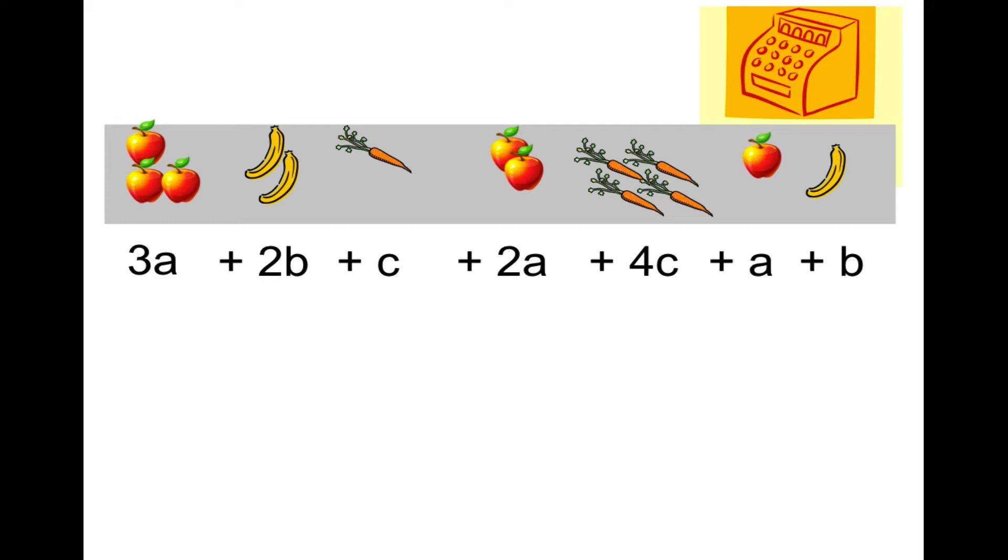Please take out as many highlighter colors as you have because we're going to need them. I'm going to begin by highlighting all the terms that have an a the same color. So I have 3a, 2a, and a. When I add them up, 3a plus 2a is 5a plus one more a, so I have 6a.